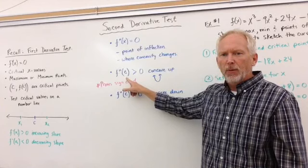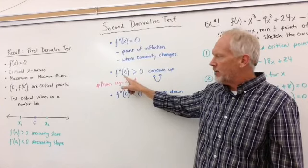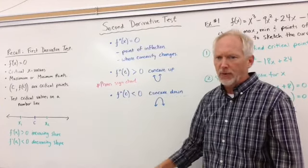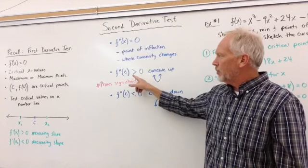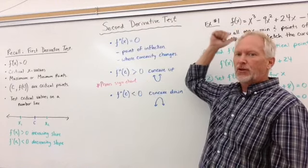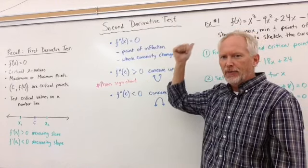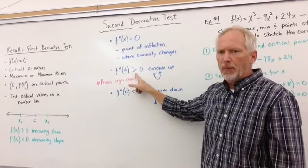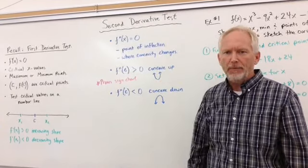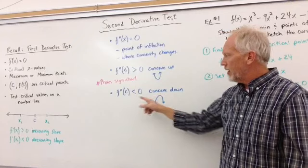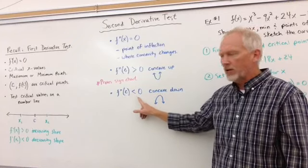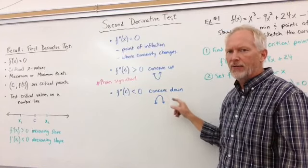Now, if f double prime of c, this is the same c that you got from your first derivative, and you plug this c now into the second derivative, and if it turns out positive, then you have concave up. If it turns out negative, if f prime of c turns out negative, then you're concave down.